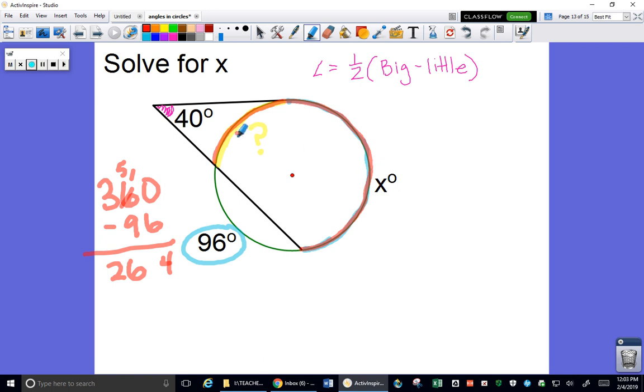But we can apply that principle of subtraction. The entire orange thing is 264. This much is x, so the leftover is 264 minus x. Whatever that x happens to be, we subtract it and we get whatever this is.